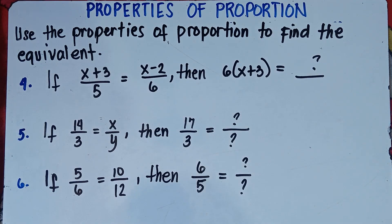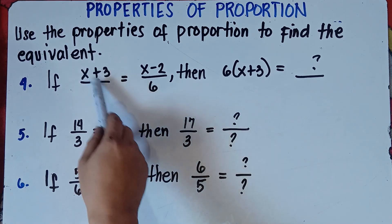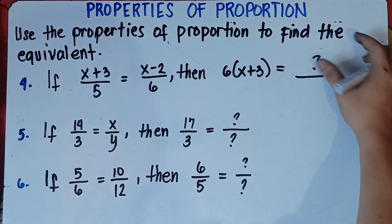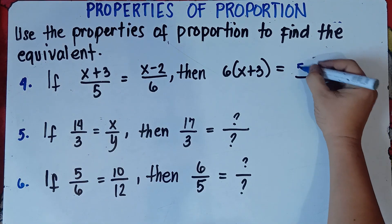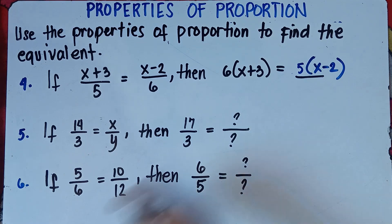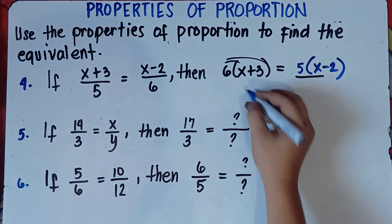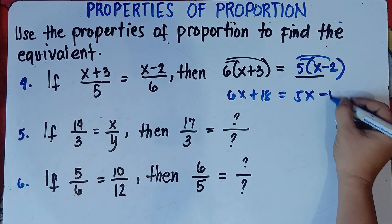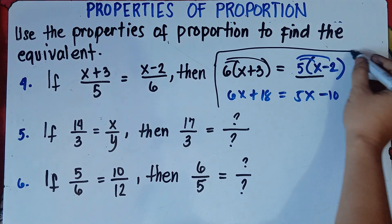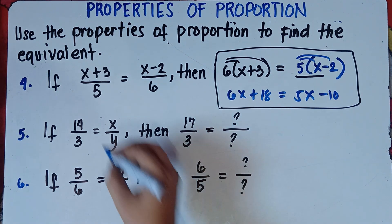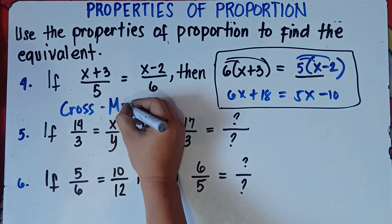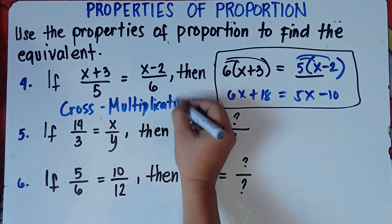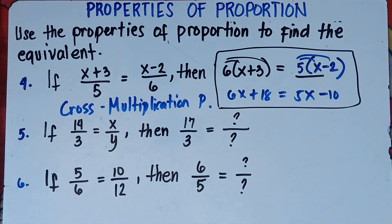Number 4: if x plus 3 over 5 equals x minus 2 over 6, then 6 times quantity x plus 3 equals what? It's been cross-multiplied: 6 times (x plus 3). Therefore our answer is 5 times (x minus 2). Distributing: 6x plus 18 equals 5x minus 10. Either form is acceptable. The property is cross-multiplication property.